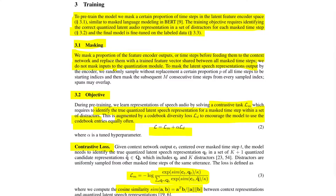To pre-train the model, a certain proportion of timestamps in the latent feature encoder space are masked, similar to masked language modeling in BERT. The training objective requires identifying the correct quantized latent audio representation in a set of distractors for each masked timestamp. The model is then fine-tuned on labeled data. Masked feature encoder outputs are replaced with a trained feature vector shared between all masked timestamps before feeding them to the context network.